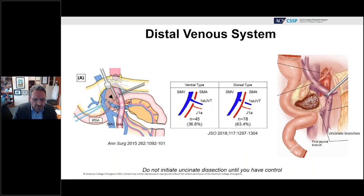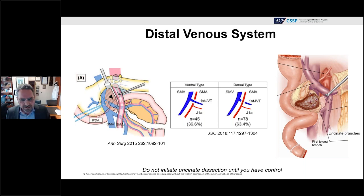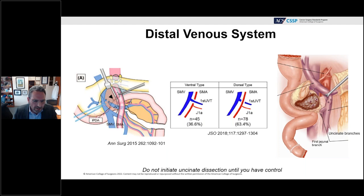It's also very important to understand the anatomy of the first jejunal vein, which is typically posterior to the superior mesenteric artery and enters the SMV on the patient's right-hand side, creating an elbow there. There is also a variant where the first jejunal branch is anterior, occurring approximately 40% of the time. I typically don't start the SMA dissection until I have control of those branches.